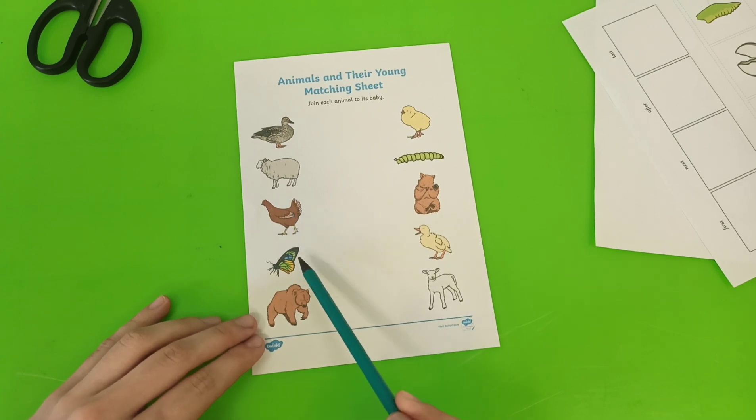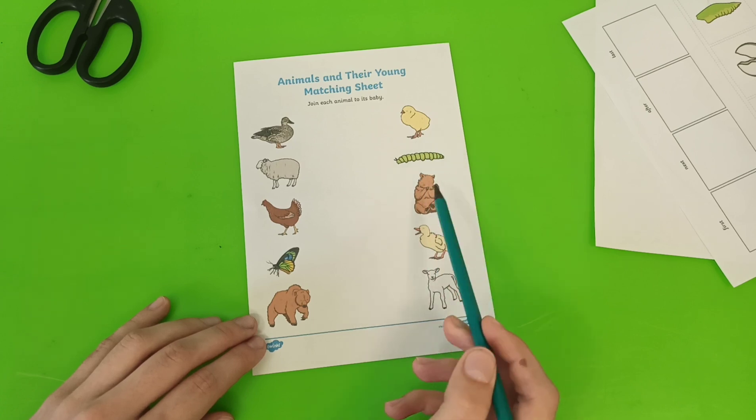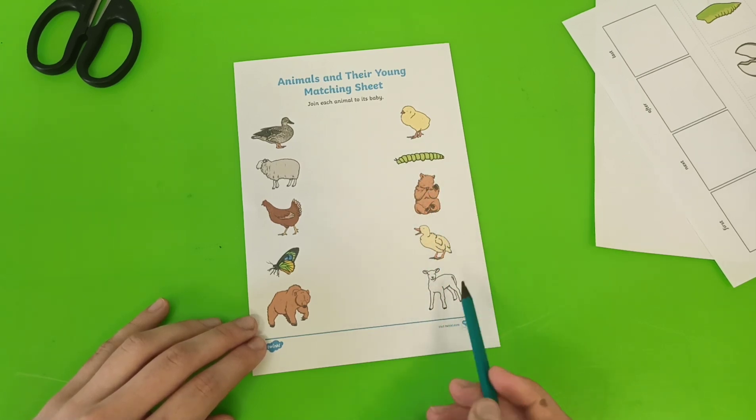Duck, sheep, hen, butterfly, bear, chicken, caterpillar, bear cub, duckling, lamb.